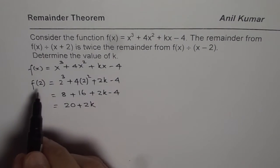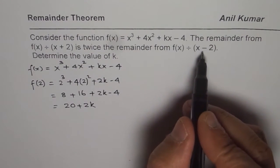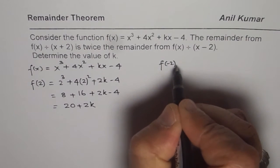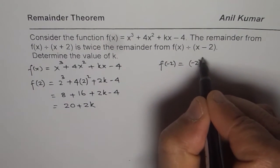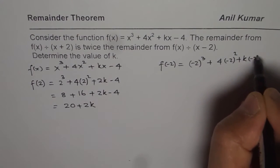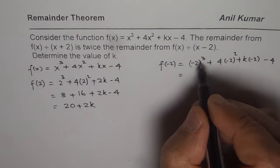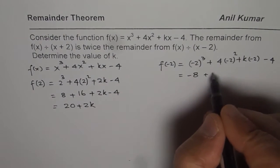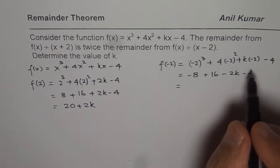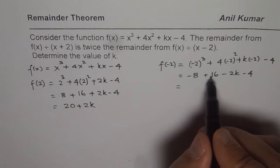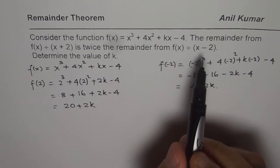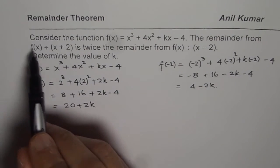Let us also find what is f of minus 2. So when you divide by x plus 2, you put f of minus 2. f of minus 2 equals minus 2 cubed plus 4 times minus 2 squared plus k times minus 2 minus 4. That gives minus 8 plus 16 minus 2k minus 4. When you add them up, minus 8 and minus 4 is minus 12, and minus 12 plus 16 is 4, so we get 4 minus 2k.